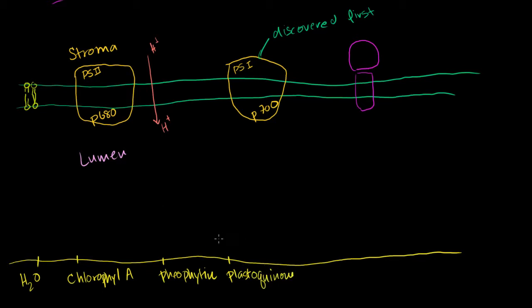And then there's a cytochrome B6F complex — I'll just write B6F. Then you have plastocyanin — I'll write PC. You don't have to memorize these unless you're studying photosynthesis — then it might make sense to memorize them. And this is in photosystem II.